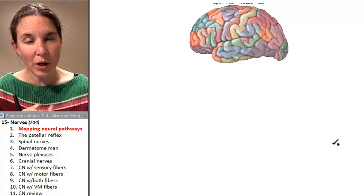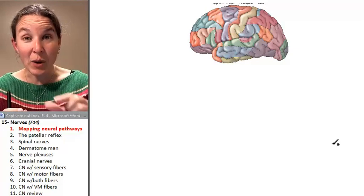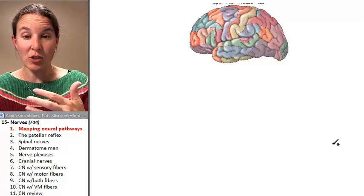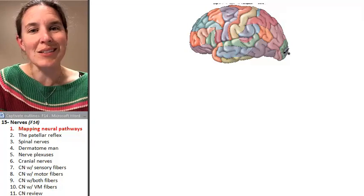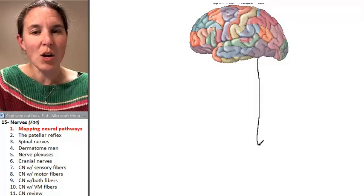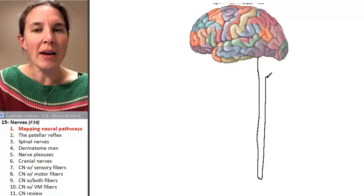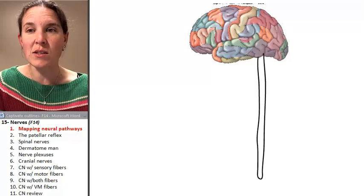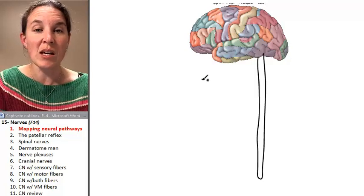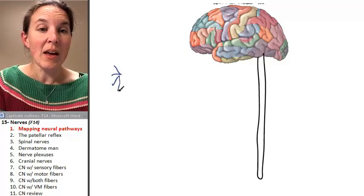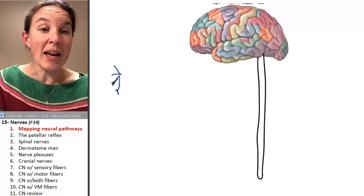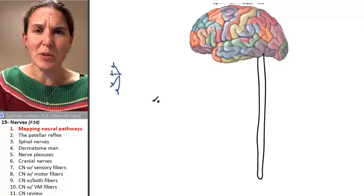Today, we're going to look at pathways that information travels. And we know, because you guys are smarty smarts, we know that information comes into the central nervous system via afferent pathways.